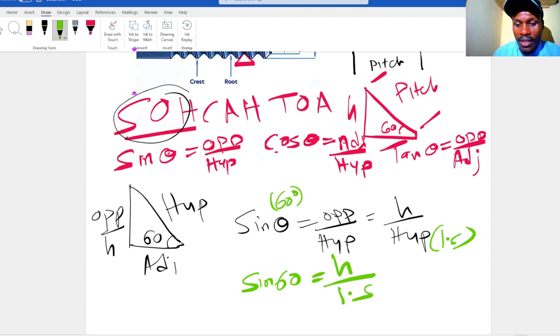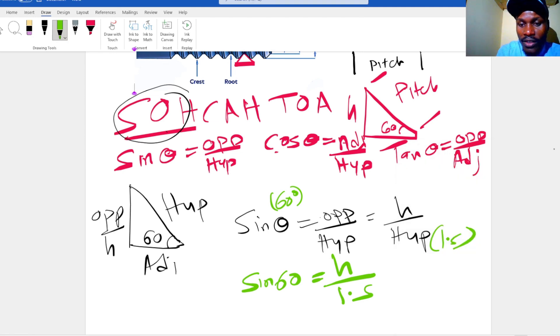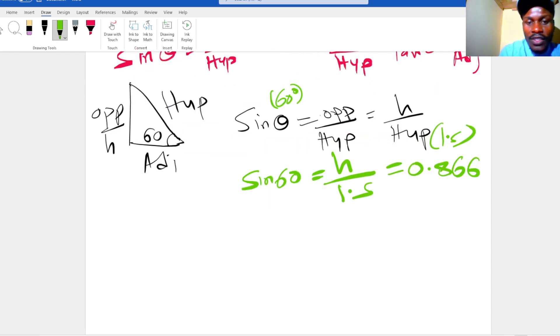Now, upon calculating the sine of an angle of 60 degrees, we get sine 60 equals 0.866. So it is the same as 0.866, and now we obtain h. So h is the same as—we multiply both sides by 1.5.